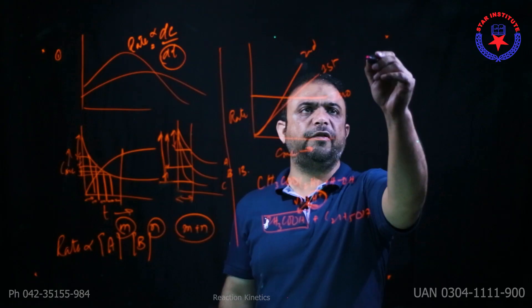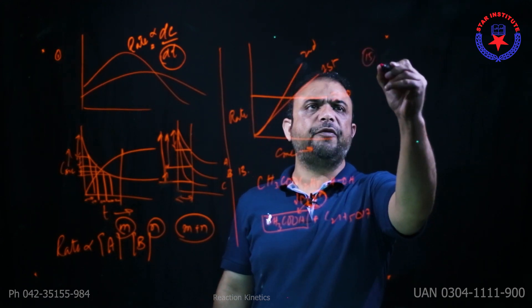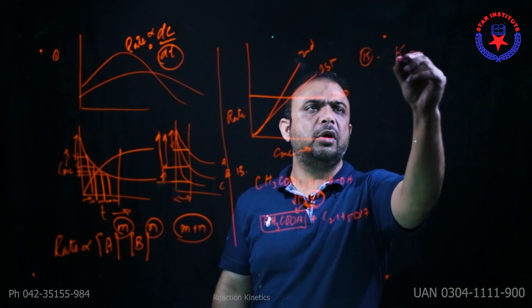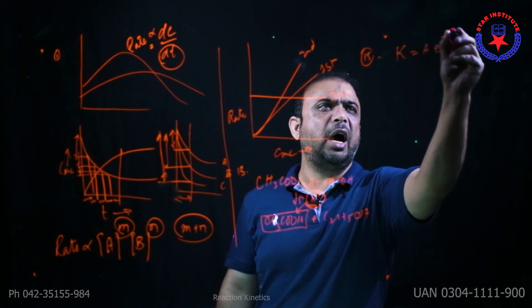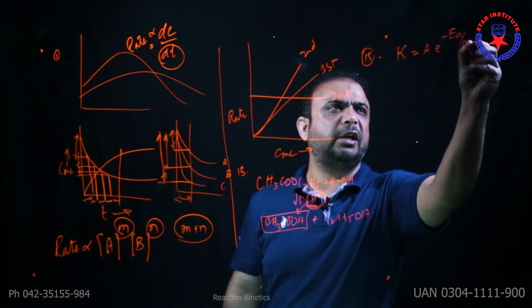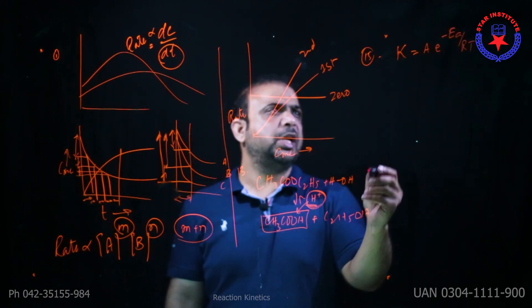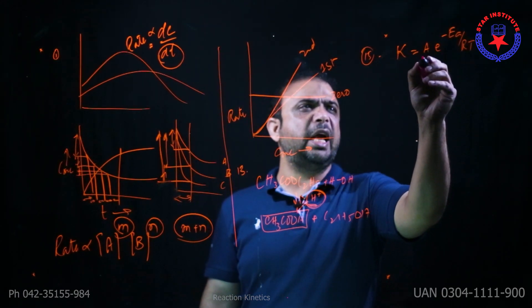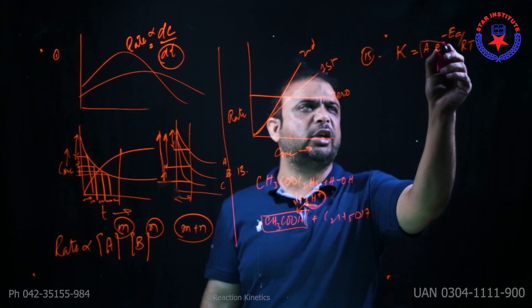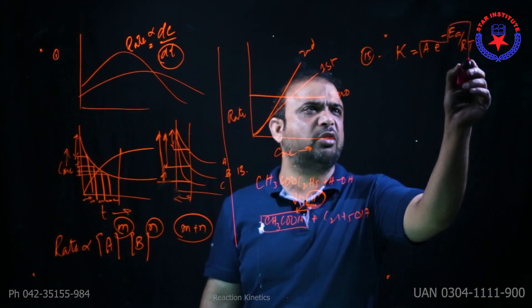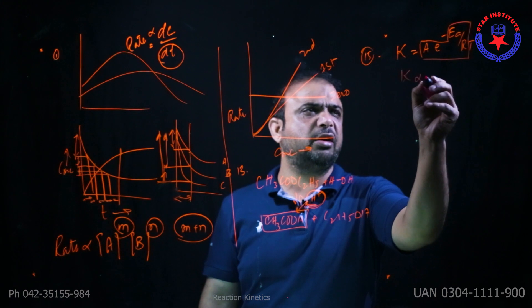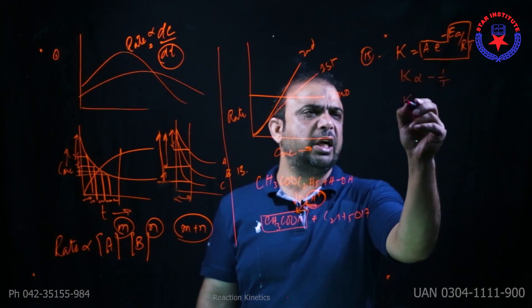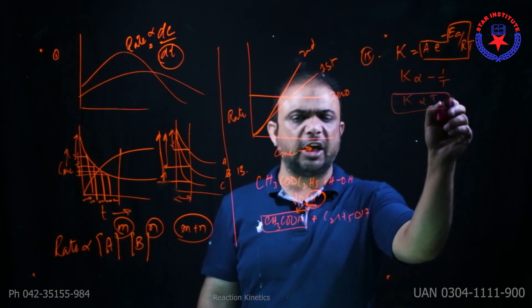Question 15: The Arrhenius equation describes the effect of temperature. The formula is k = Ae^(-Ea/RT). Here A is the Arrhenius constant, Ea is activation energy, R is a constant. So the rate is proportional to e^(-1/T).